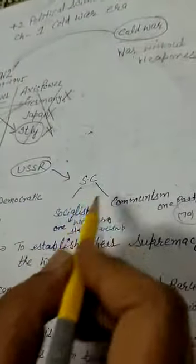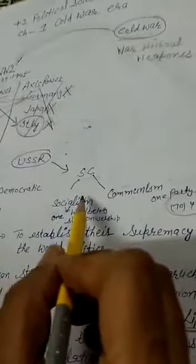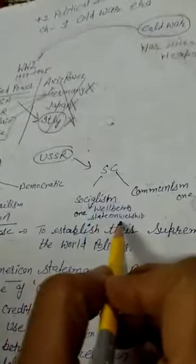But USSR believed in socialism and communism. Socialism means state ownership. Communism was a one-party system. For 70 years, USSR had one party rule.